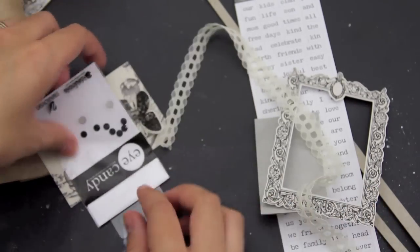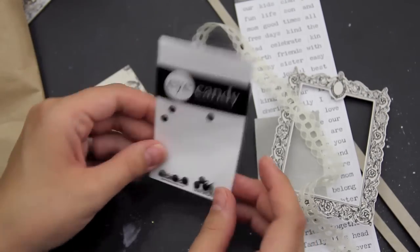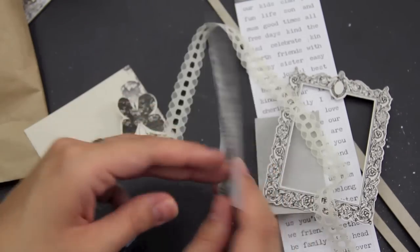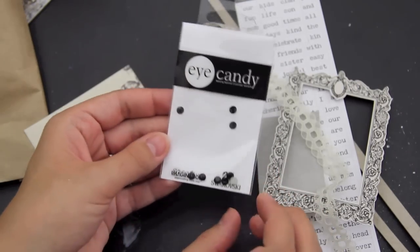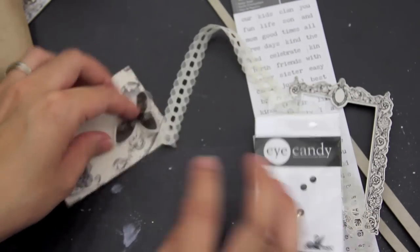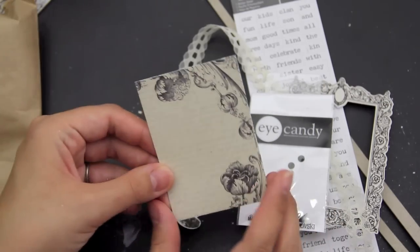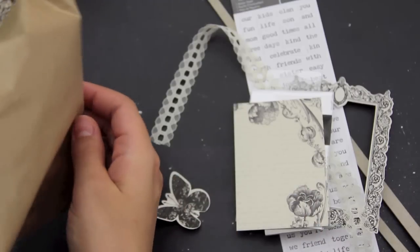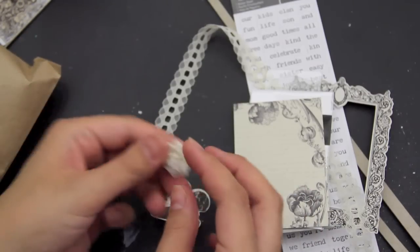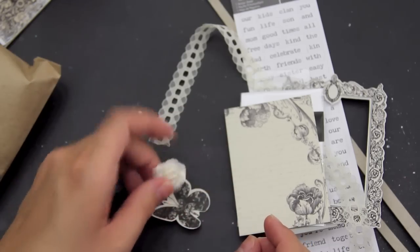Also a little frame like this one, some lace or trims. I'm going to use these eye candies here. They're really cute from Creative Imaginations. I'm going to use this butterfly and this little ATC, also this little Prima flower.